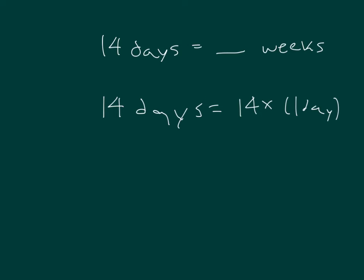We can rewrite this then, equaling 14 times 1/7 of a week. 1/7 of a week does equal 1 day. As we work that out, that's equal to 14/7 of a week, which equals 2 weeks.